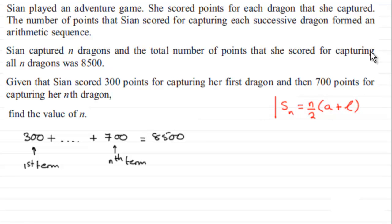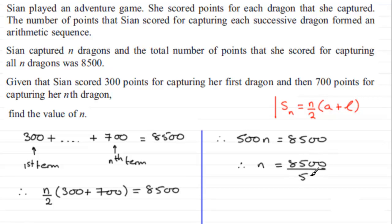If we're doing this, what we've got then is therefore n over 2 multiplied by the first term 300 plus the last term 700 is going to come to 8,500. So that means that if we simplify this, 1,000 here divided by 2 is going to be 500. So we got 500n equals 8,500. And to get n, we obviously divide both sides by 500, and if we do that, 8,500 divided by 500 gives us n equaling 17.